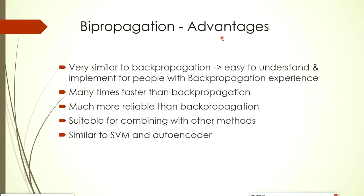Advantages of bi-propagation: it is very similar to backpropagation, so it is easy to understand and implement for those with backpropagation experience. It is many times faster than backpropagation, much more reliable, and single layers do not have local minima problems. It is also suitable for combining with other methods — you can use one, two, or three layers with bi-propagation and then continue with other layers using other algorithms.